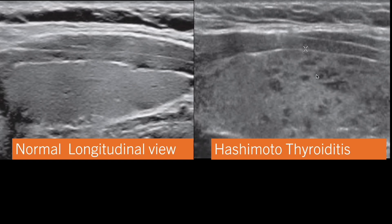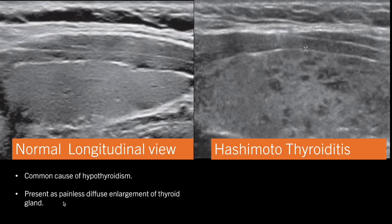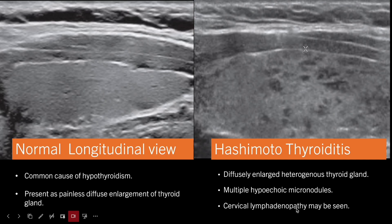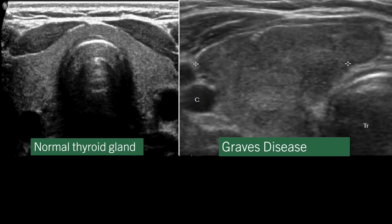Here we can see a normal thyroid lobe compared to a thyroid lobe in Hashimoto thyroiditis. Hashimoto thyroiditis is the common cause of hypothyroidism and usually presents as painless diffuse enlargement of the thyroid gland. On ultrasonography, the thyroid is diffusely enlarged and the thyroid parenchyma is heterogeneous. Another important finding is multiple hypoechoic micronodules. Sometimes cervical lymphadenopathy may be seen, but it is generally more associated with thyroid malignancy.